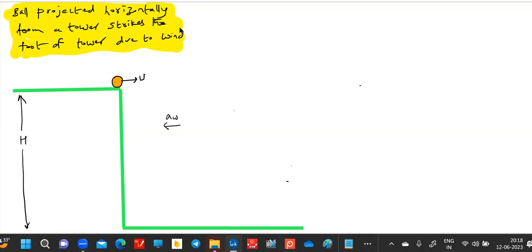It was given horizontal velocity u at t equal to zero. Then the gravity will act and the wind will retard the motion of the particle, because the wind is blowing towards left.